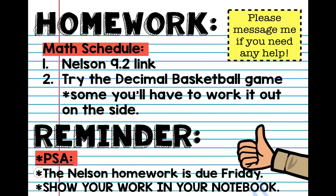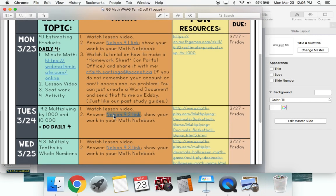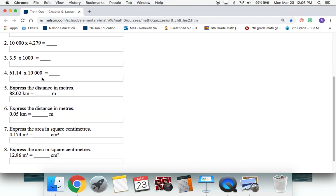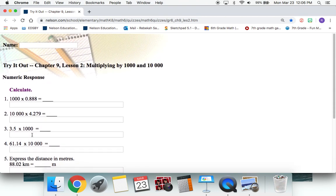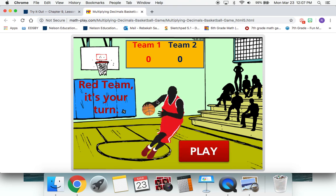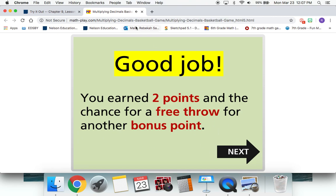Alright, so for your homework today, you're going to go back to your math schedule and check your Nelson link. Then you're going to try the basketball game. Some of them you'll have to work out on the side. If you look at your link, here it is — Tuesday, 9.2 link. We did this just now in our lesson, so a lot of these are pretty easy. You only have eight questions for today. Once you're finished, you're going to try this basketball game — it's pretty easy. Also, the music's really loud, so turn down your stuff. Okay, so 1.2 times 100, two zeros, 1, 2 — so I know my answer is 120.